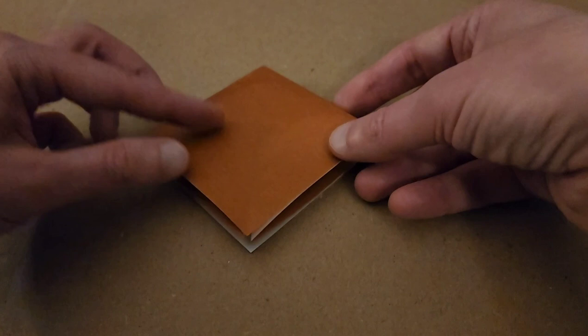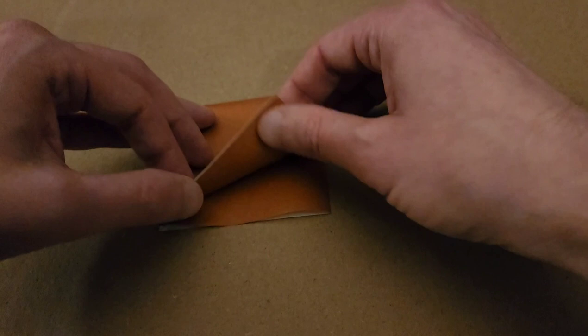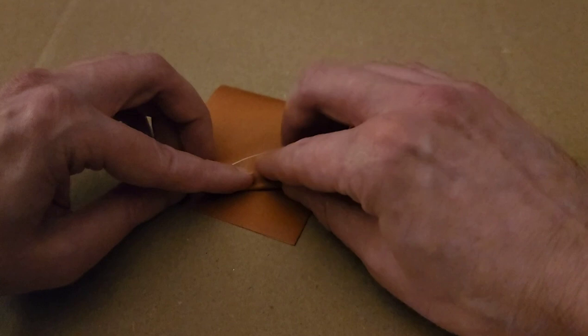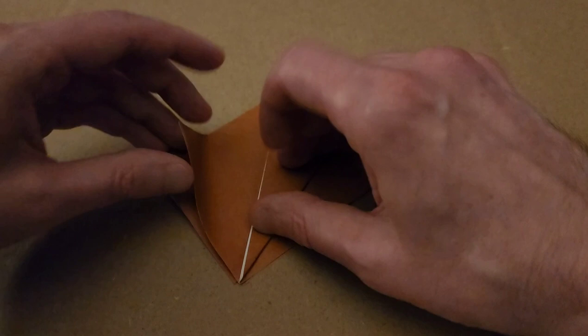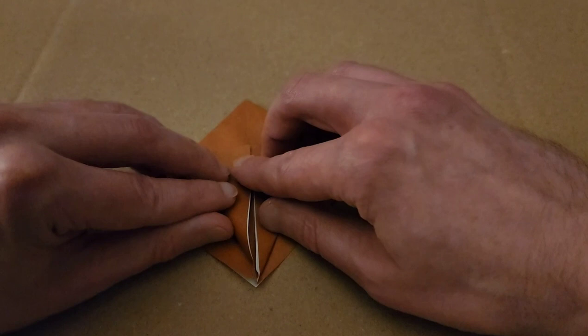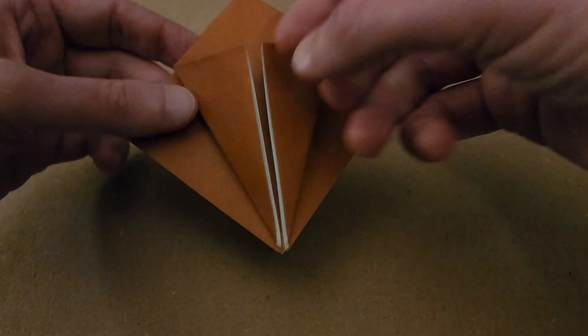Okay, so next up, with the open edges at the bottom, we're going to take this side edge and this side edge and fold it to the center crease for the kite fold, and just the top layer. So fold that to the center crease. And then do the same thing with the other side. There we go.